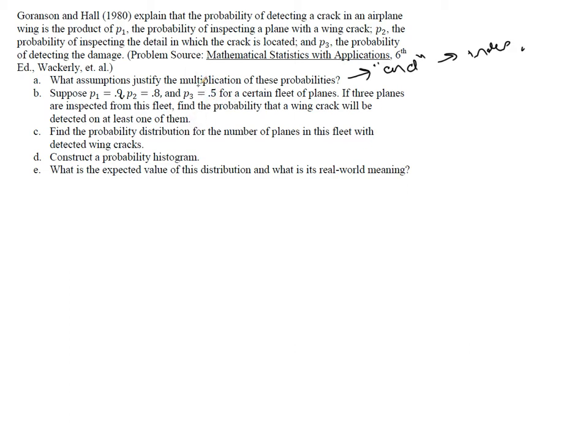Okay, so that means that we can multiply these together. That means that the probability of successfully catching a plane with a damaged wing would be 0.9 times 0.8 times 0.5, which would come out to a probability of 0.36 when we multiply these together.